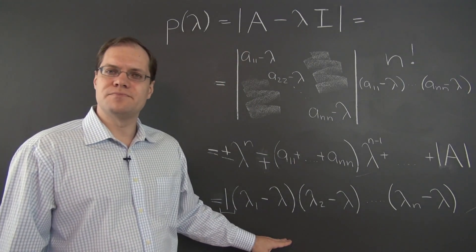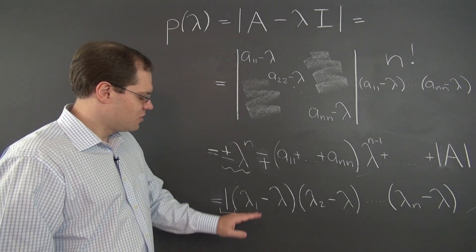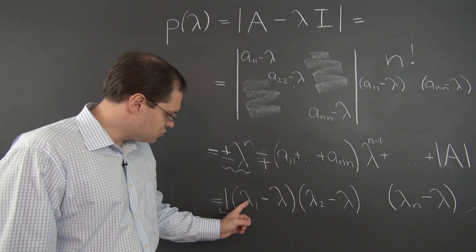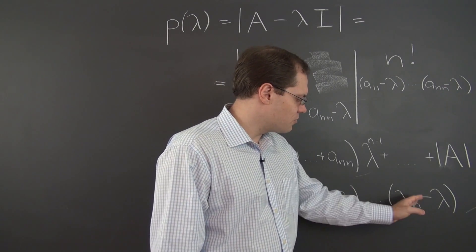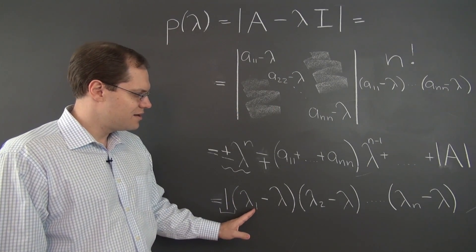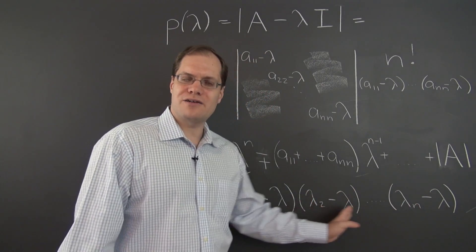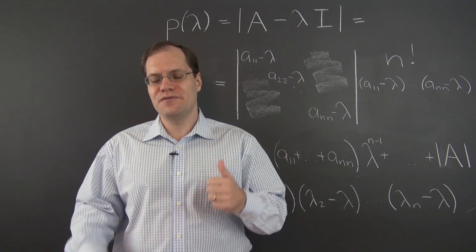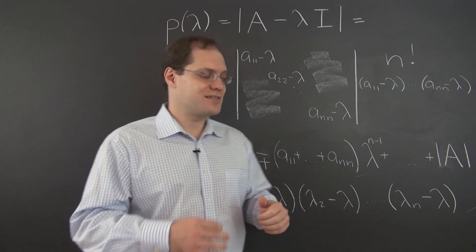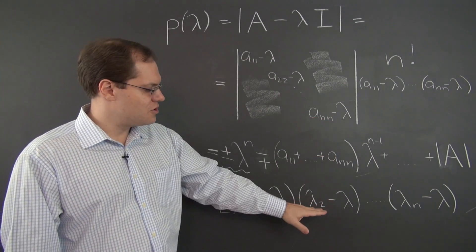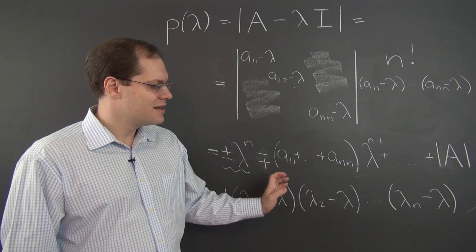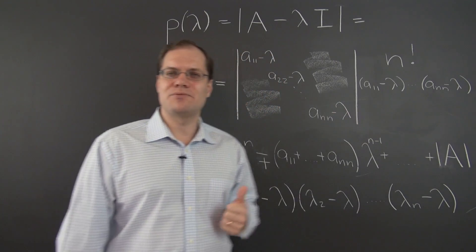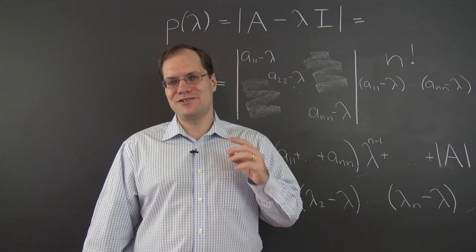The free coefficient results when you choose the constant number from each set of parentheses, so the free term will be the product of the lambdas — that's true for all polynomials with n roots. But we just discovered that the free coefficient is the determinant of the matrix. So the product of the roots, which are the eigenvalues, equals the determinant. We've captured the second magical property of eigenvalues.